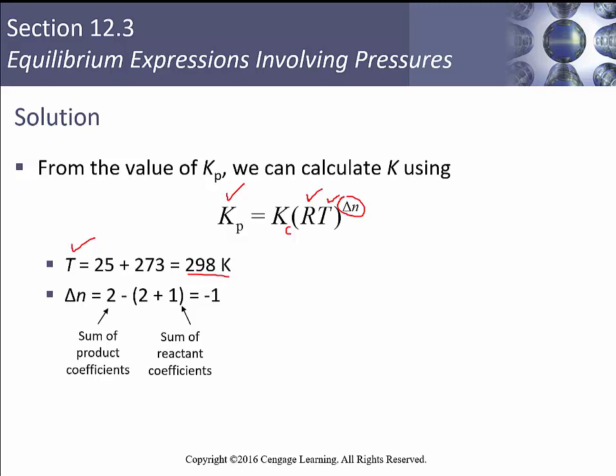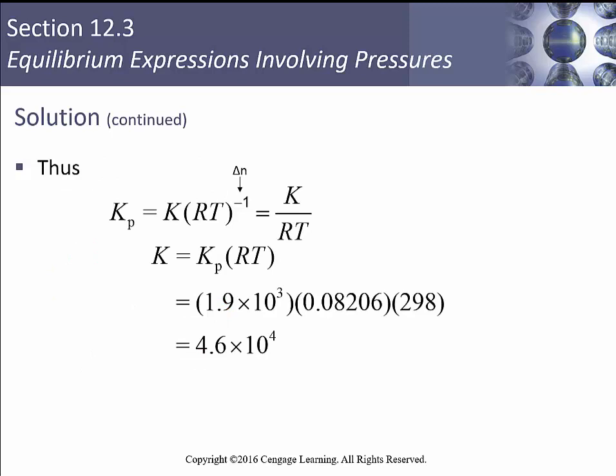And so the sum of the product coefficients is 2, and the sum of the reactant coefficients is 4. So our delta n is minus 2. So we can rewrite this plugging in all of the numbers we now know. So KP is equal to KC times RT to the minus 1. That's our delta n.